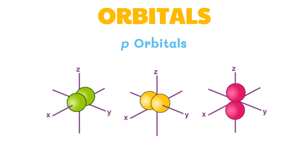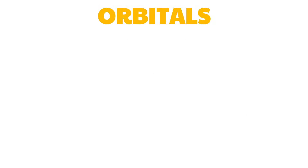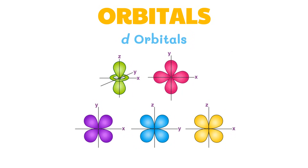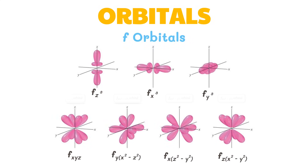A p orbital is dumbbell shaped. The three equivalent p orbitals are p sub x, p sub y, and p sub z. There are five kinds of d orbitals: d sub yz, d sub xz, d sub xy, d sub x²−y², and d sub z². Except for d sub z², these orbitals consist of four lobes, in contrast to the two lobes of the p orbital. There are seven f orbitals, which have the most diffuse shape compared to the other orbitals.